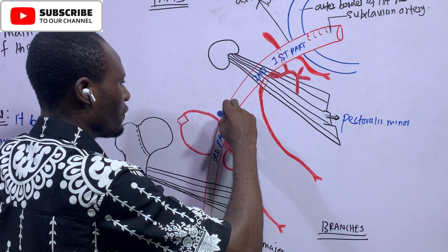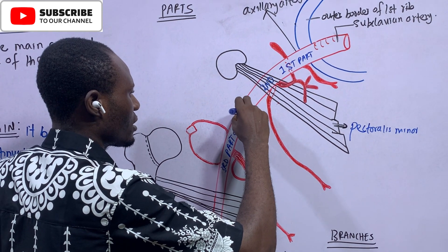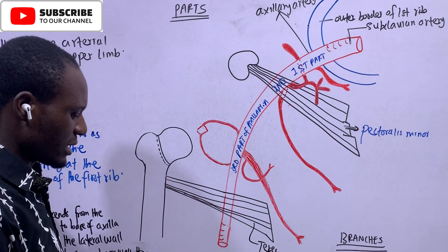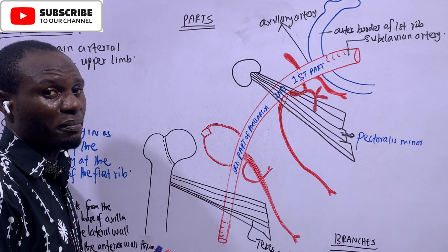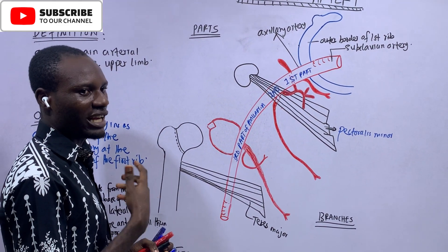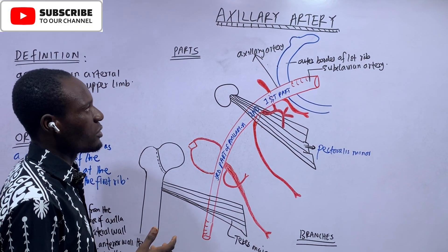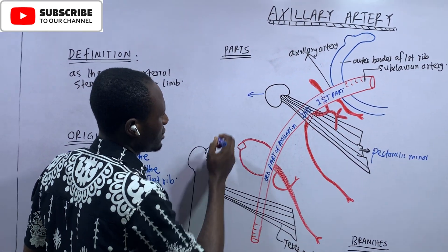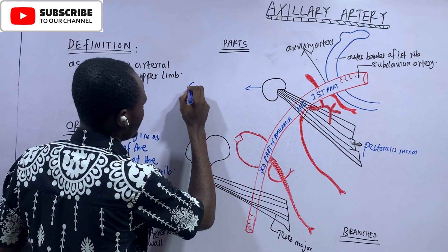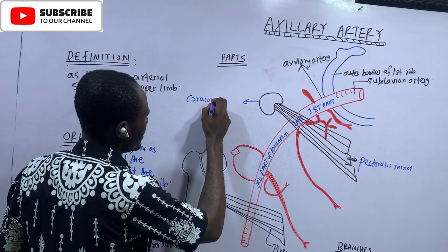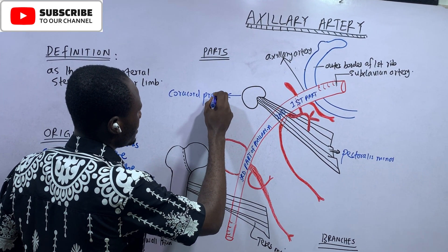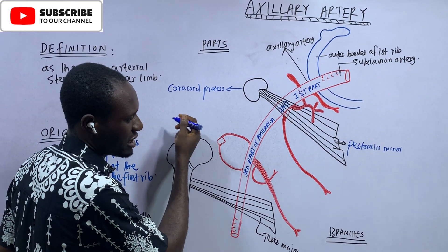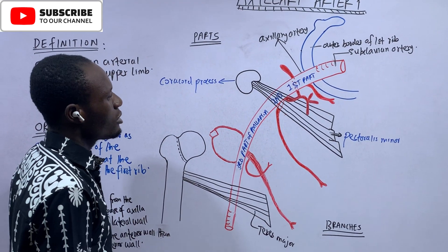That is the significance of the pectoralis minor — it is a landmark in discussing the axillary artery. This bony prominence is the coracoid process, because the coracoid process receives the insertion of the pectoralis minor muscle at its medial aspect. High yield.